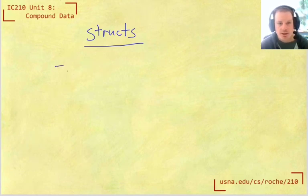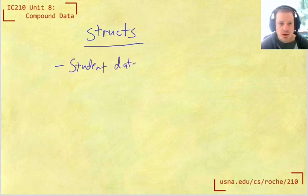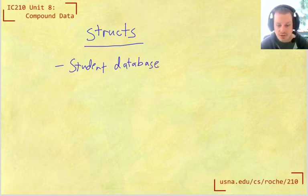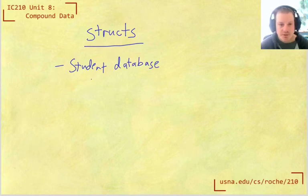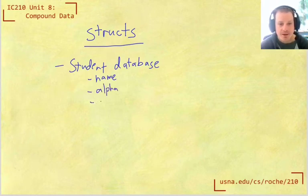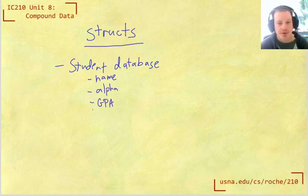So we can think about, for example, storing a student database, where we want to remember things about all the students and their names and their grades. And so for each student, we want to have their name, maybe their alpha if you're at USNA, and their GPA or CQPR or whatever you want to call it, and some things like that.